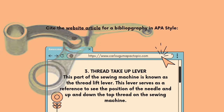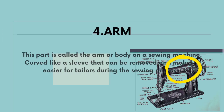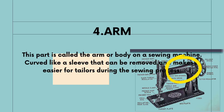Third, the thread-take-up lever. This part of the sewing machine is known as the thread-take-up lever. This lever serves as a reference to see the position of the needle and moves the top thread up and down on the sewing machine. Fourth, the arm. This part is called the arm or body on the sewing machine, curved like a sleeve that can be removed and makes it easier for tailors during the sewing process.